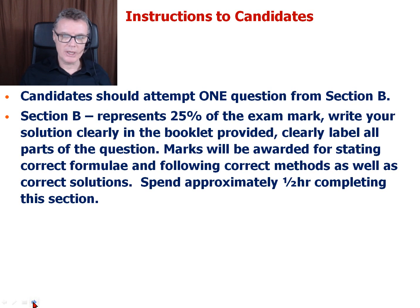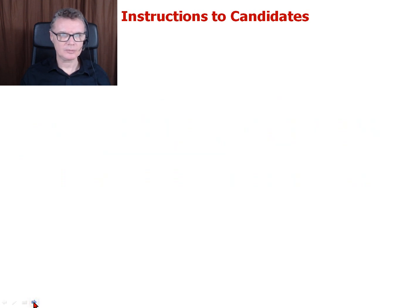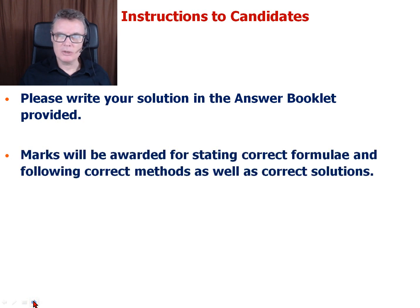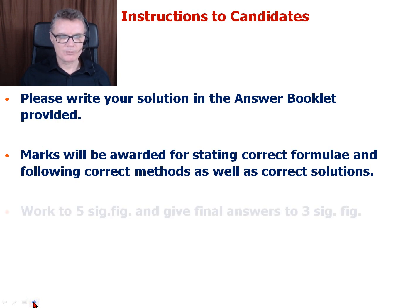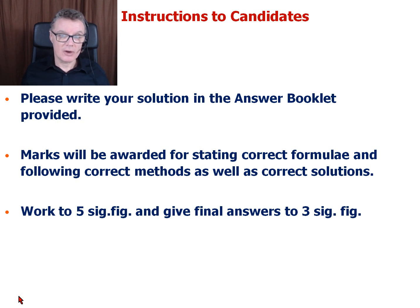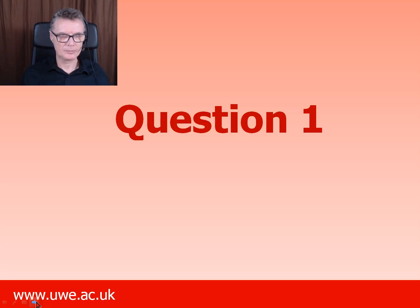Write any formulae down and put numbers in that you think should go into the formulae — all these things will be marked, as well as whether you get the final answer correct. For Section B, make sure you write your solution in your answer book provided, start by stating the correct formulae you're going to use, and because there will be some follow-through questions, work to about five significant figures and present final answers to three significant figures.